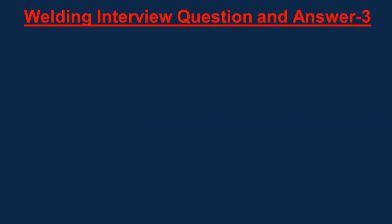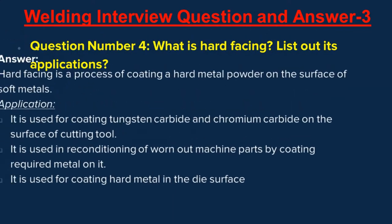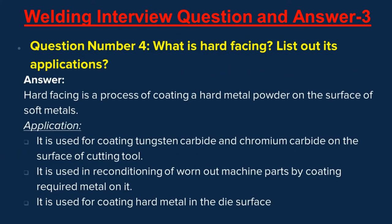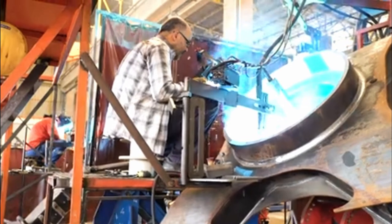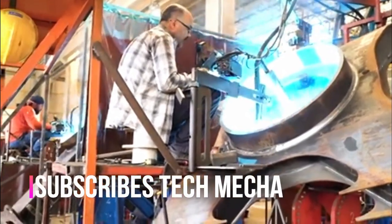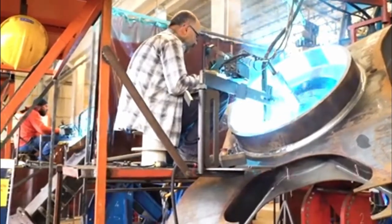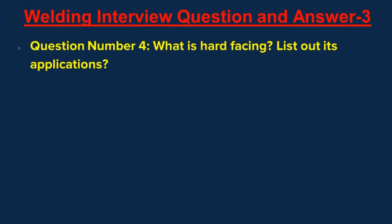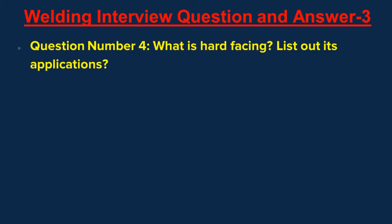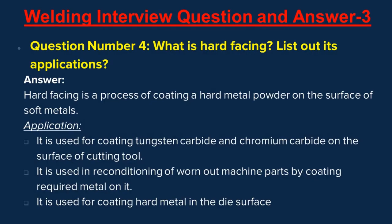Question number four: What is hard facing? List out its applications. Answer: Hard facing is a process of coating a hard metal powder on the surface of soft metals. It is used for coating tungsten carbide and chromium carbide on the surface of cutting tools, reconditioning worn-out machine parts by coating required metal on them, and coating hard metal on die surfaces.